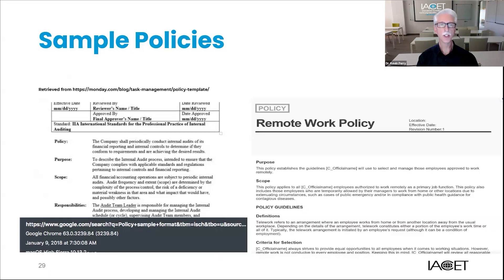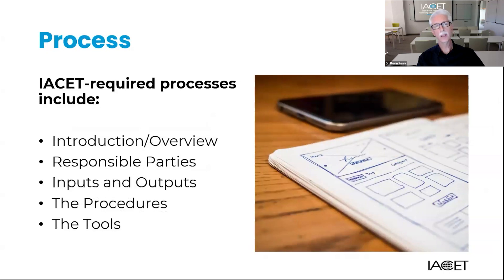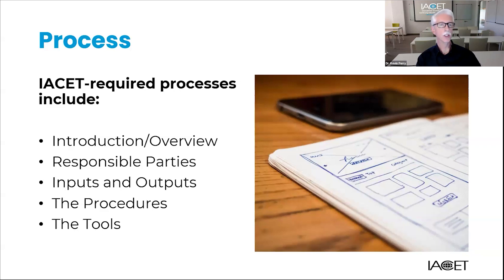Now that we've covered policies, let's turn our attention to the next type of document required: your process documents. IACET accreditation requires you to submit written processes that explain how you manage your organization. The IACET commissioners will expect your process documents to include the following: an introduction or overview — the process objectives, the description of the process, why it is needed, and when it is performed. Responsible parties — the position assigned to the task, which should also appear on your organizational chart. Inputs and outputs — what is needed by way of data or information to execute the process and perform the steps.